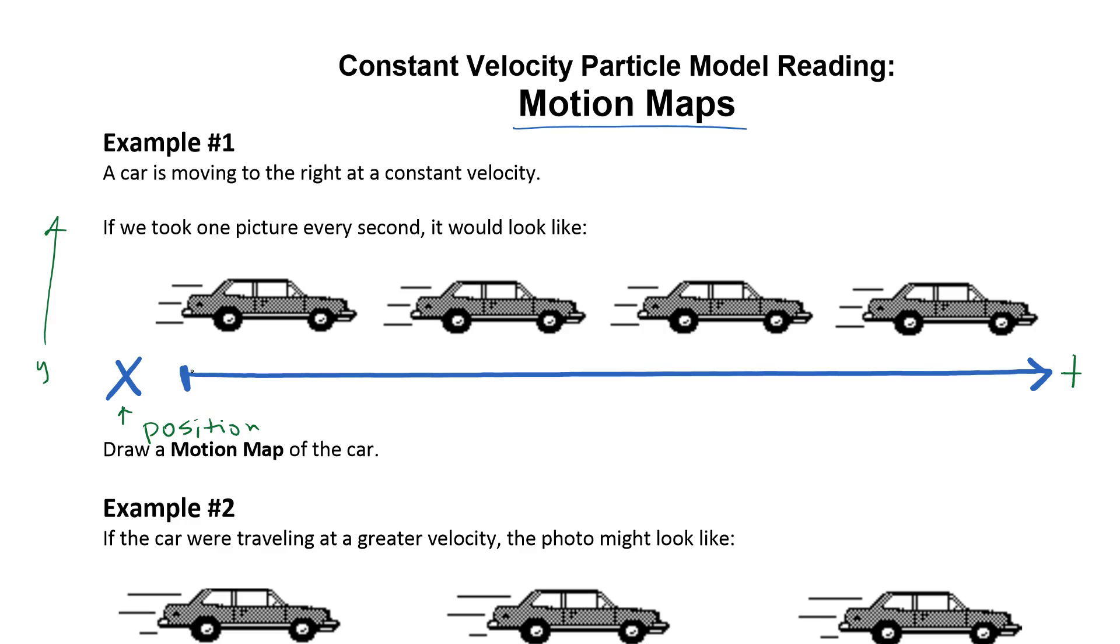So now I need to add little dots for where the car is. I'm going to put the dot approximately where the bumper of the car is, and I'll draw a dot there, a dot here, draw a dot there, and a dot there. That's the position where the car was at each second.